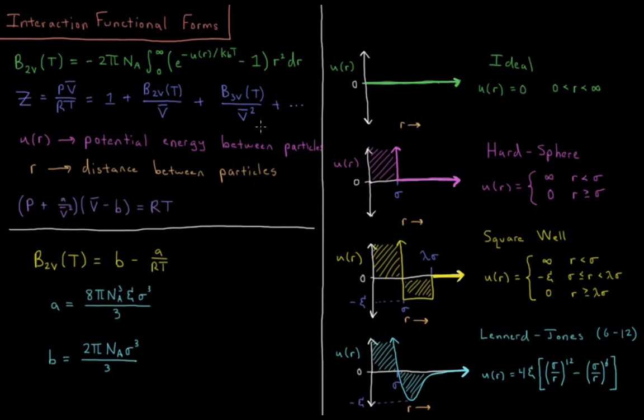The third, fourth, and every virial coefficient after the second have more complicated expressions, but they all depend on terms like e to the minus u(r) over k_B T. So if u is always zero, this term always ends up being zero and the integrals vanish. Ideal gases have no potential energy and thus no virial coefficients — they always behave exactly ideally.